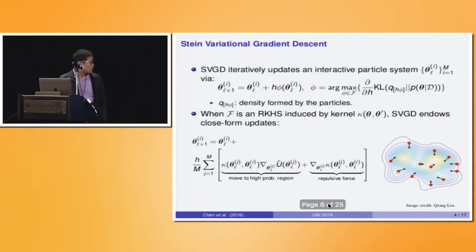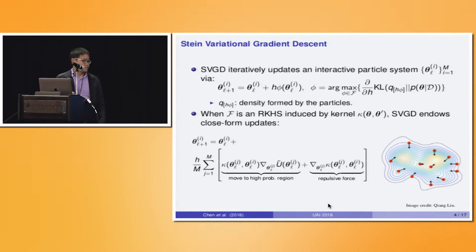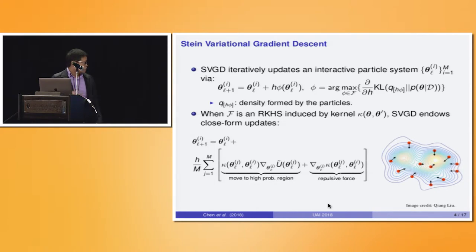In contrast, Stein Variational Gradient Descent is a particle optimization sampling algorithm, meaning that initially we have M particles theta_1 to theta_M. These points are called particles, and in each iteration we update them iteratively following an update equation. Here phi is a function that describes the update direction for each of the particles.